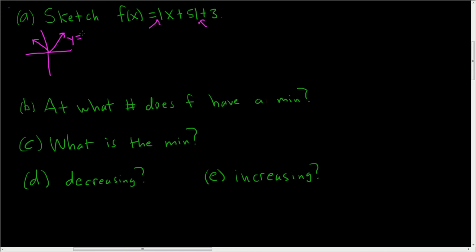This would be the absolute value of X. Now when you add a number to the X, we're adding 5, that means we go left 5. And when you add a number to the actual absolute value function, like here we're adding 3, that means we go up 3.